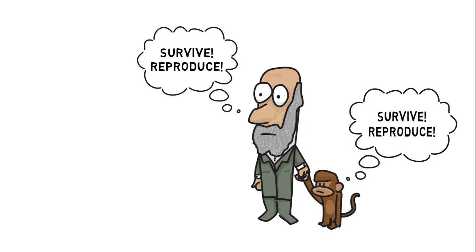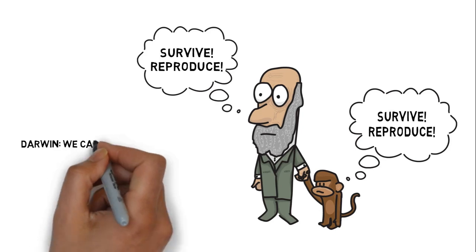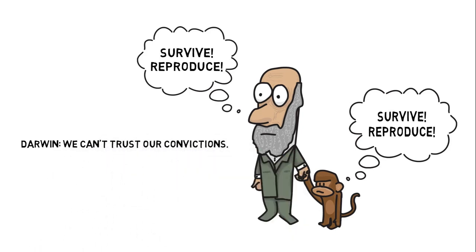Putting all this together, we can see why belief in naturalism undermines the cognitive faculties required to affirm naturalism. As Darwin eventually noticed, if our faculties were selected to find food and find a mate, we have no basis for trusting our convictions, and this obviously includes the conviction that the natural world is all that exists.